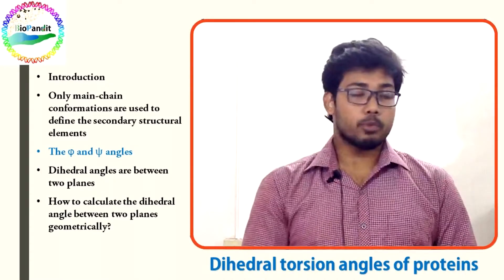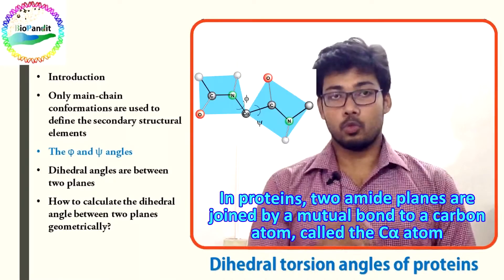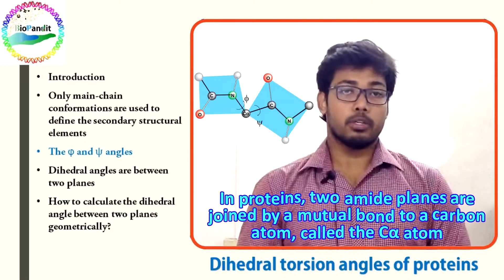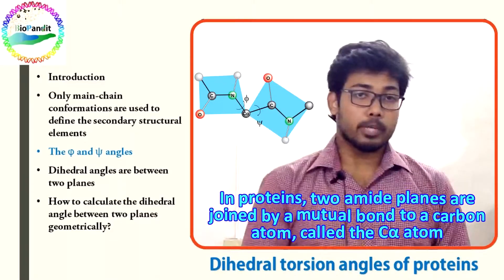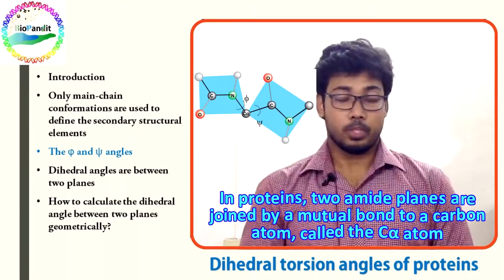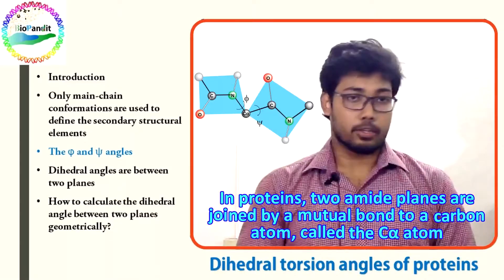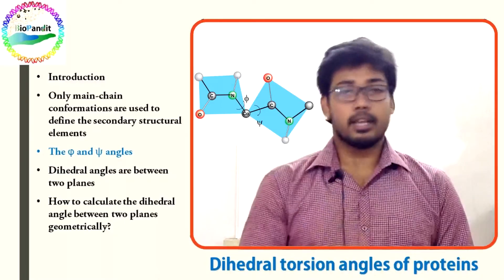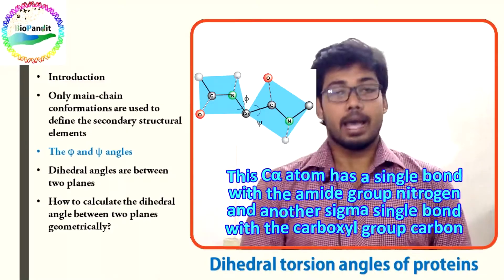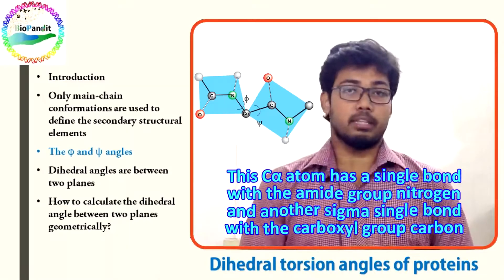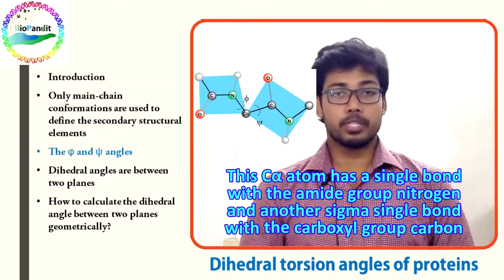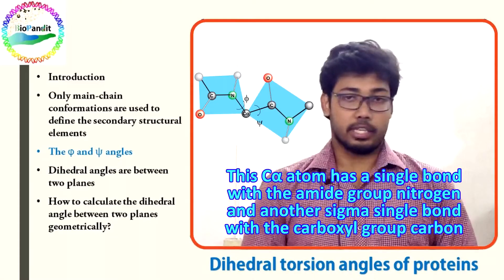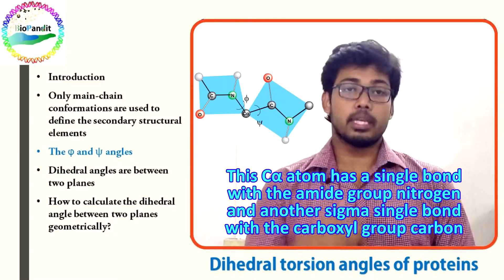In proteins, two amide planes are joined by a mutual bond to a carbon atom called the C-alpha atom. This C-alpha atom has a sigma single bond with the amide group nitrogen and another sigma single bond with the carboxyl group carbon.